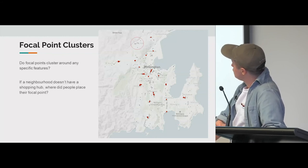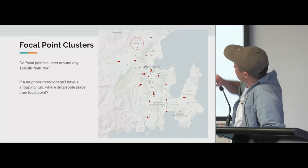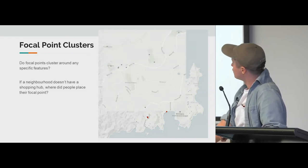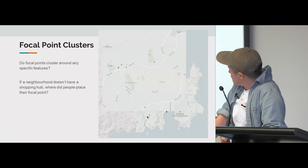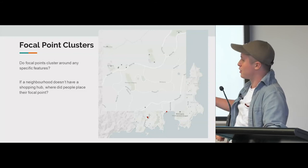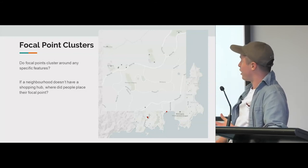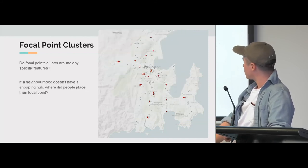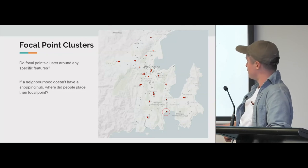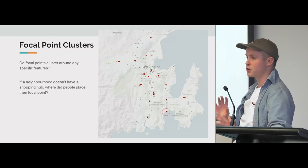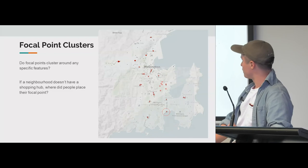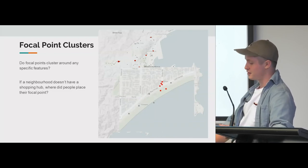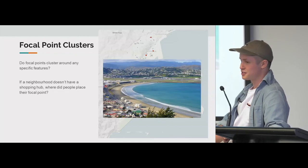For neighbourhoods that didn't have a shopping centre, where were people putting their focal points? Up in Wilton in North Wellington, which doesn't have an official shopping centre, a lot of people put it near the school, or near the park, or near their house. Another example was Lyall Bay in the south of Wellington — it had a significant cluster but doesn't have an official shopping area. When you zoom in, people put it by the beach, which kind of makes sense because it's Lyall Bay. It's quite a lovely beach and a cool finding.